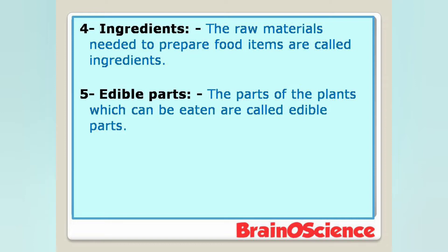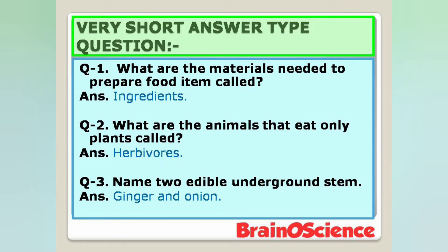Number four is Ingredients. The raw materials needed to prepare a food item are called ingredients. Ki humein food item prepare karne ke liye jin raw materials ki zarurat hoti hai unko ingredients kehte hain. Number five is Edible Parts. The parts of plants which can be eaten are called edible parts — ki plant ka wo part jisko hum khate hain usko edible parts kehte hain.